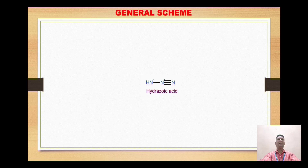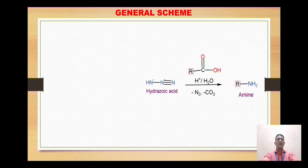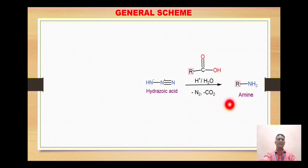A special reagent used is hydrazoic acid. Looking at the structure of hydrazoic acid, it is a three-nitrogen-containing molecule attached with a single hydrogen, commonly written as HN3. When hydrazoic acid is treated with carboxylic acid (RCOOH) in the presence of acid and water, there is liberation of nitrogen gas and carbon dioxide.